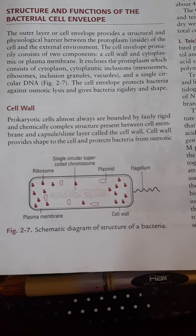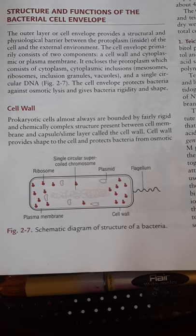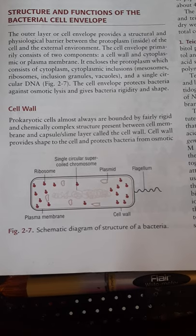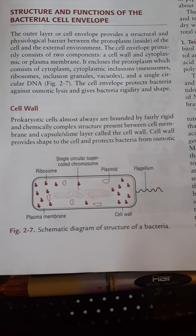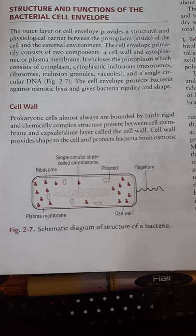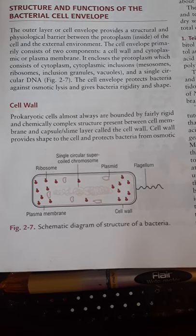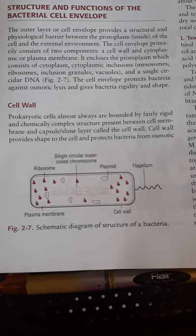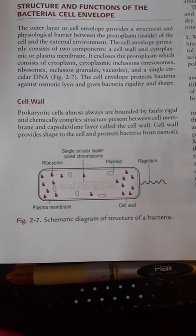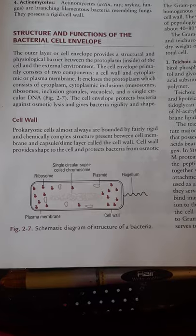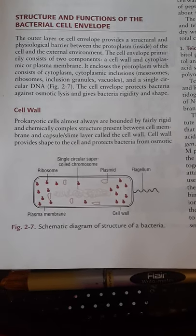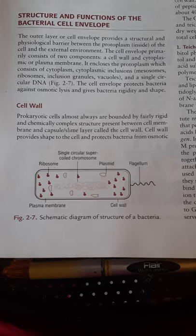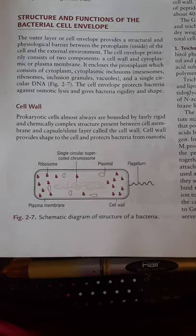The cell envelope encloses the protoplasm which consists of cytoplasm, cytoplasmic inclusions like mesosomes, ribosomes, inclusion granules, vacuoles and a single circular DNA. The cell envelope protects bacteria against osmotic lysis and gives bacteria rigidity and shape.